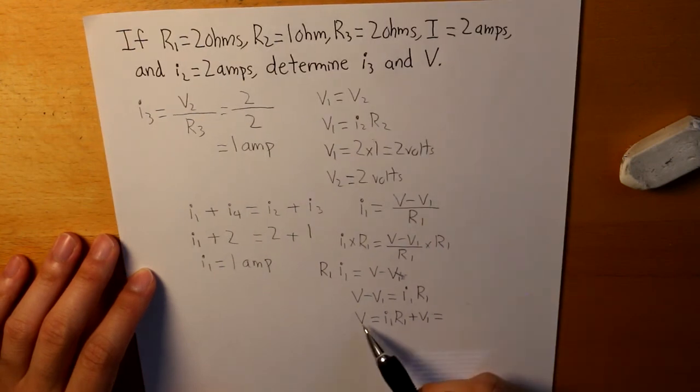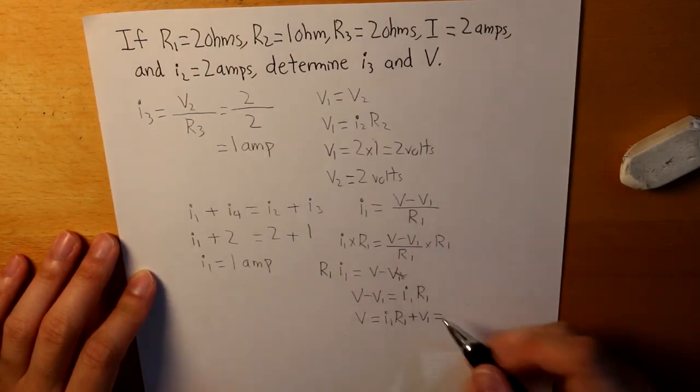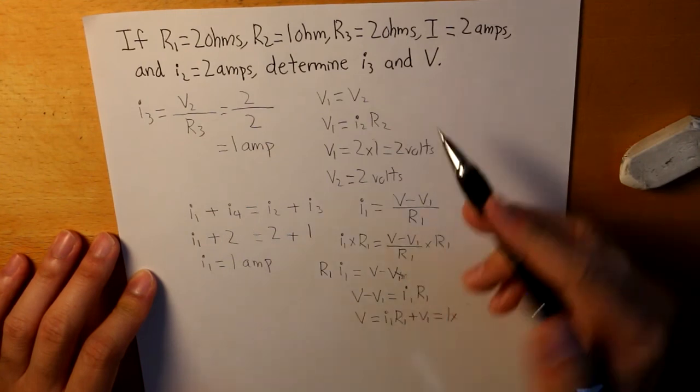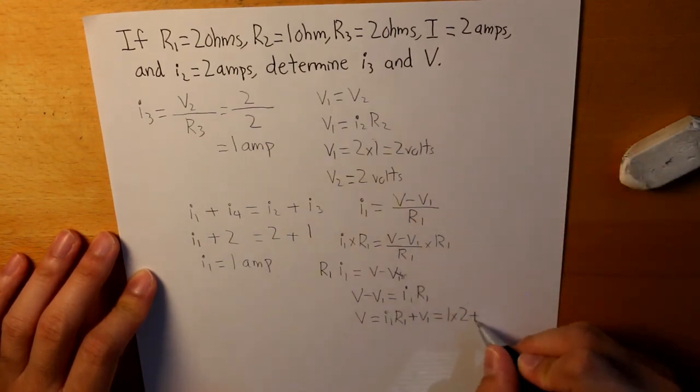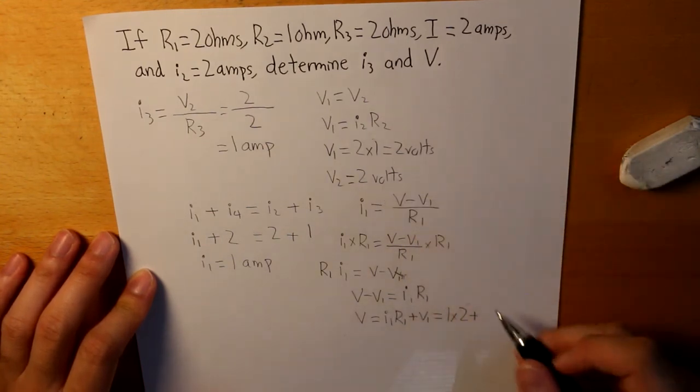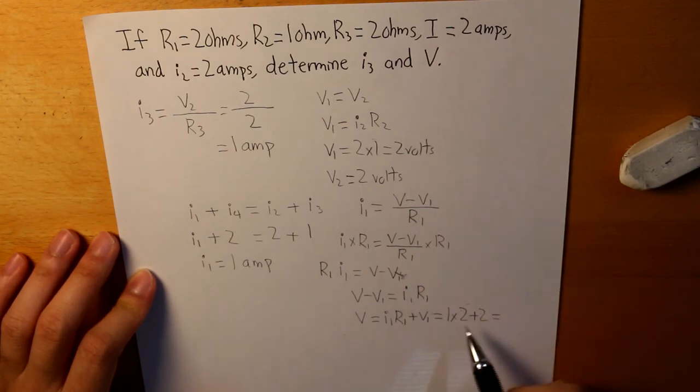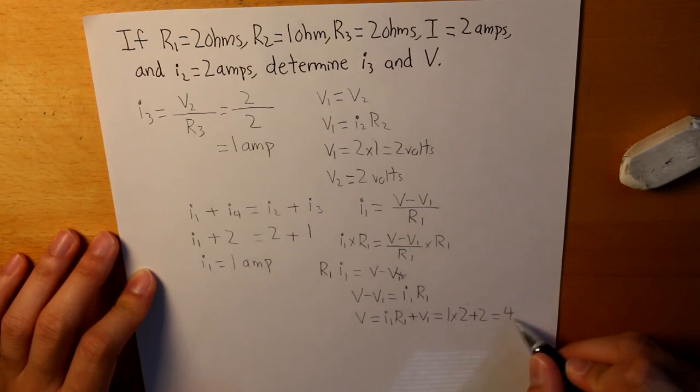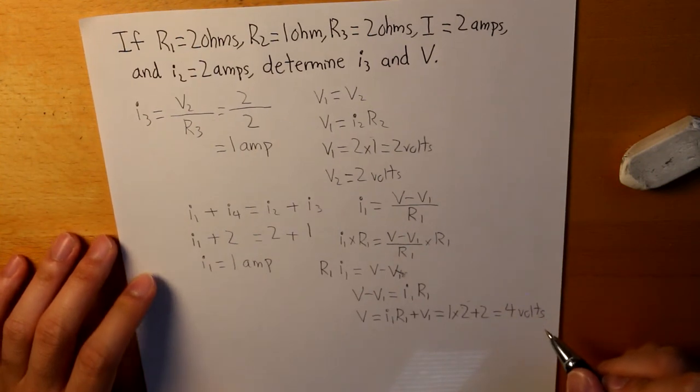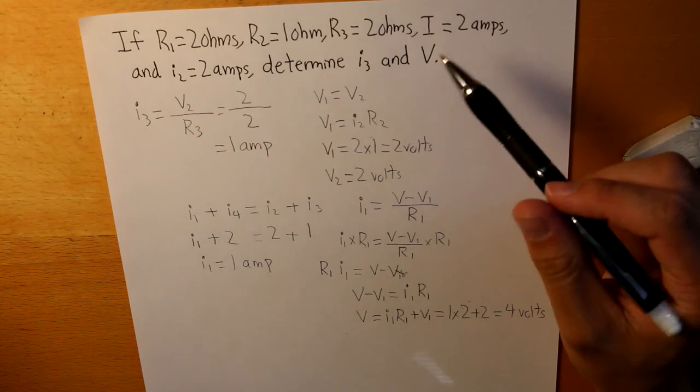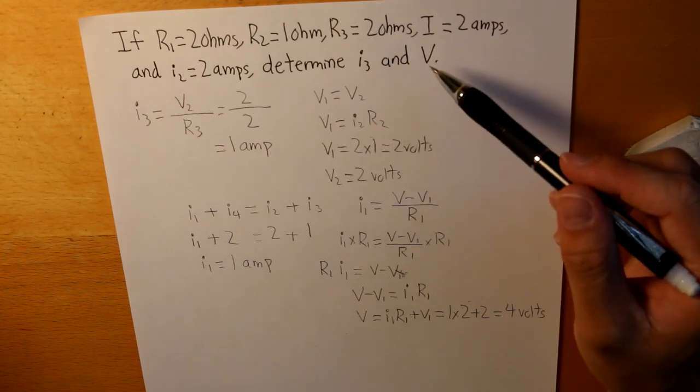And now we can solve what V is. So I1 is 1, R1 is 2, and V1 is 2 volts. And if we take this, we get 4 volts. And we have now solved the answer.